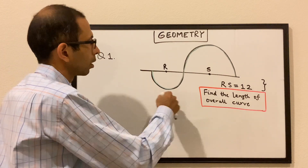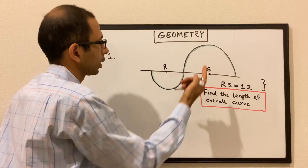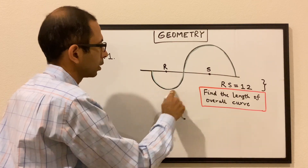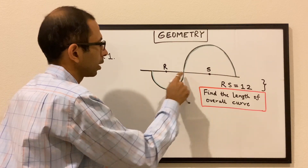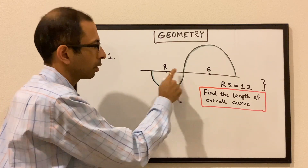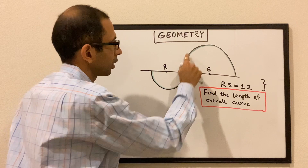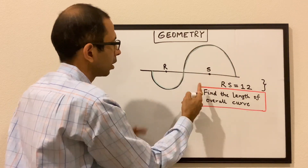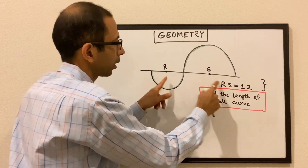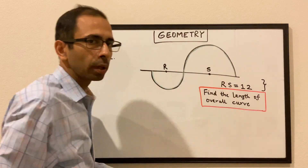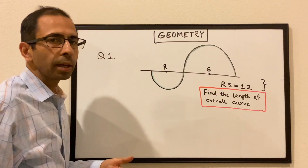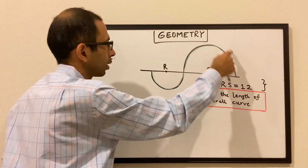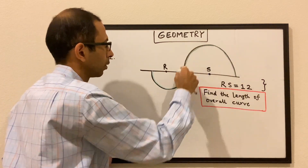We have a situation where there is a semicircle with center R, then another semicircle with center S. The length of RS is given as 12, and we have to find the length of this overall curve.